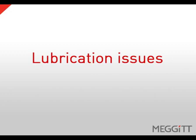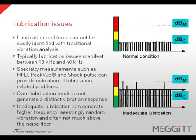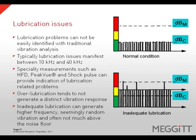Lubrication problems are not easily identified with traditional vibration techniques. A lubrication problem will manifest itself in the 10 kHz to 40 kHz range. Specialty measurements such as HFD, peak view, and shock pulse can provide an indication of a lubrication-related problem. Over-lubrication does not tend to generate a distinct vibration response, while under-lubrication can generate high-frequency, seemingly random vibration that is often not much higher in amplitude than the noise floor.